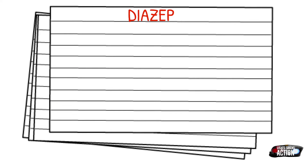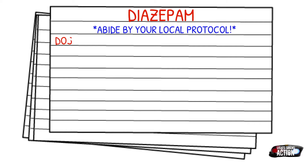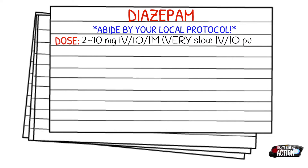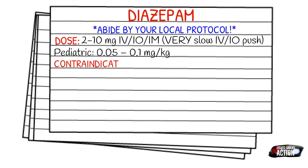Before we get into the dosages of Valium, I just want to stress to abide by your local protocol and scope of practice because dosages do vary. Your dose is going to be 2 to 10 milligrams IV, IO, or intramuscular. If you're giving it IV or IO, it needs to be a very slow IV/IO push. Your pediatric dose is going to be 0.05 to 0.1 milligrams per kilogram.